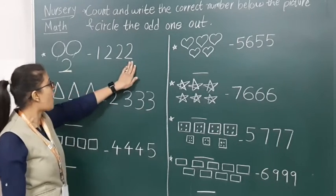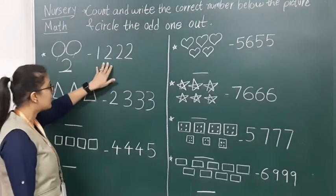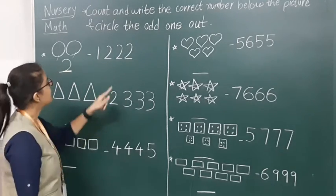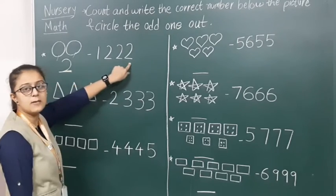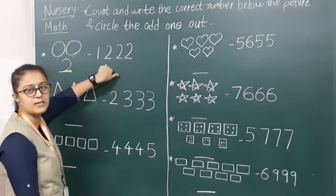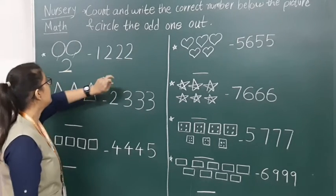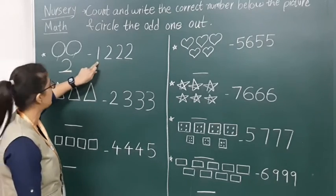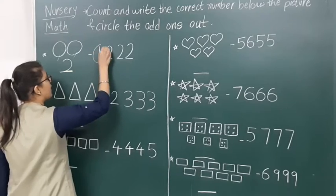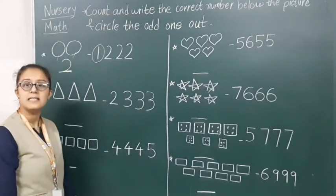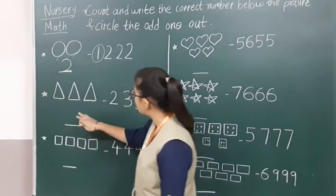Now we have to find the odd number. So here we have the number two appearing three times: 1, 2, 3. And there is one number 1 over here — that is odd. So number 1 is the odd one, and we will make a circle on it.